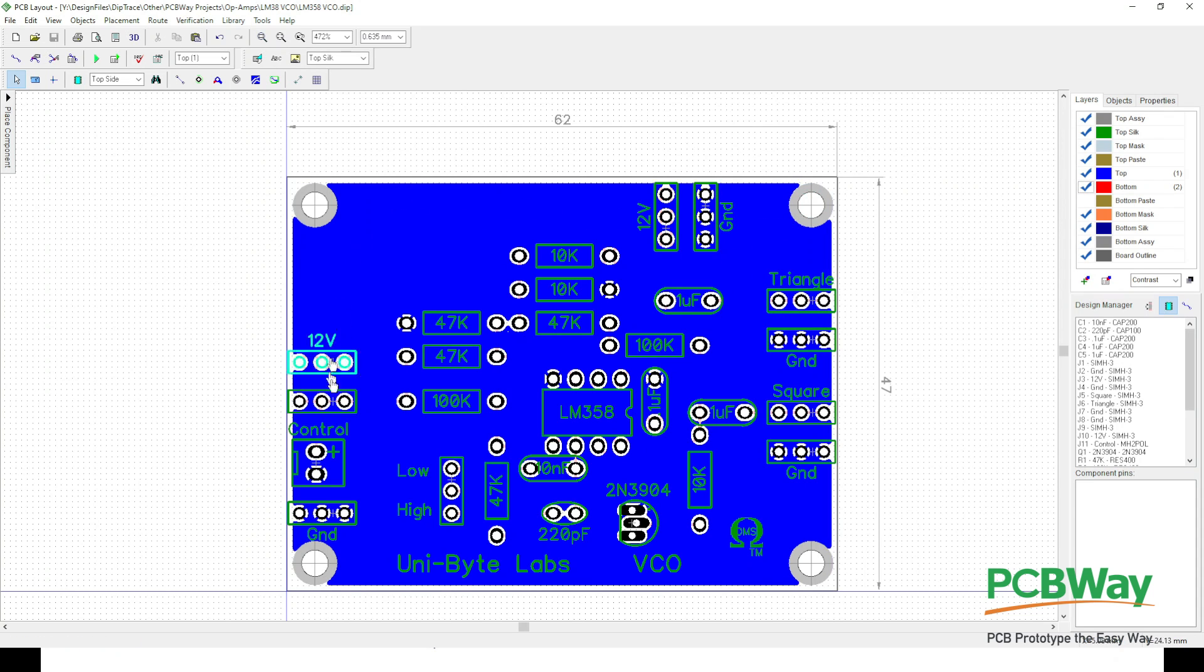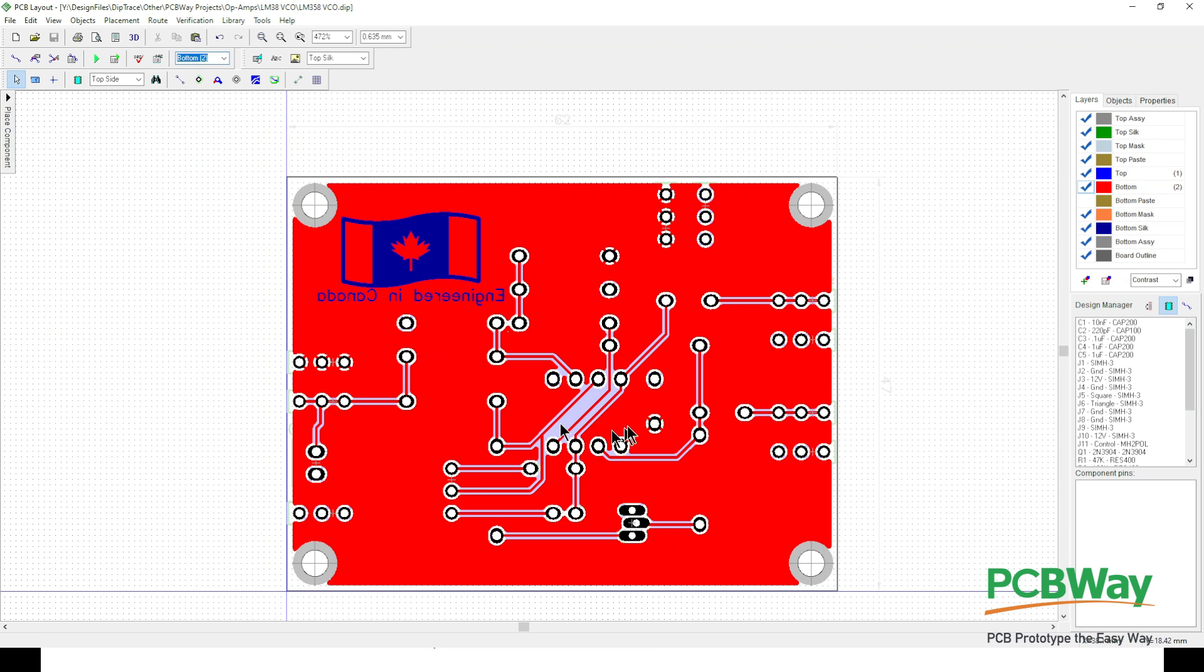And what I did this time is I put the ground plane on the top. As usual, I try to work out a layout that would allow me to put all the traces on one side of the board. And what I did this time, which I didn't do last time but I do most of the time, is I put in a copper pour for VCC. So that's actually a pretty complete copper pour, and essentially is another voltage plane in this case. So it should be a nice little board.